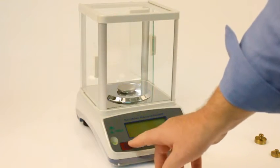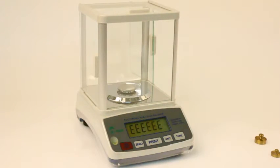To calibrate the HRB, we press the on-off button and wait for the display to show all dashes. Whilst we are waiting, please note that the HRB has an all-glass draft shield. When we reach all dashes, we will press the zero key.